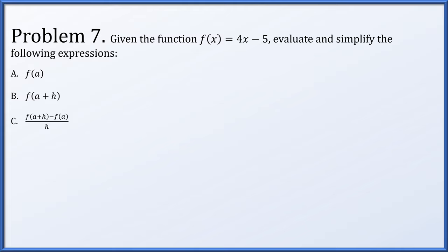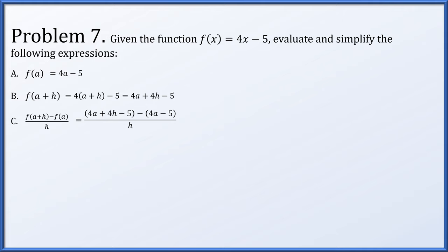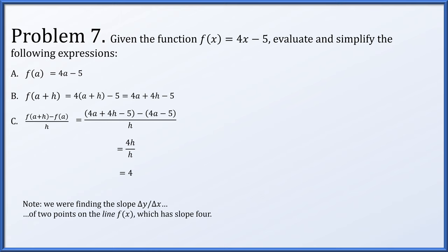In problem seven, for f(x) = 4x - 5, we evaluate f(a), f(a + h), and [f(a + h) - f(a)] / h. f(a) = 4a - 5. f(a + h) = 4(a + h) - 5 = 4a + 4h - 5. In the difference quotient, the 4a terms cancel and the -5 terms cancel, leaving 4h over h, which simplifies to 4. This makes sense because f(x) is a line of slope 4, so the slope between any two points on it is always 4.